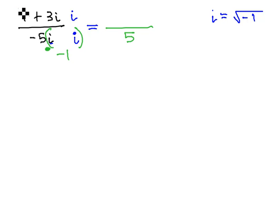In the numerator, we simply have to distribute that i through each term, giving us 7i plus 3i times i is 3i squared, but again, i squared is negative 1. That really means 3 times negative 1, or negative 3.